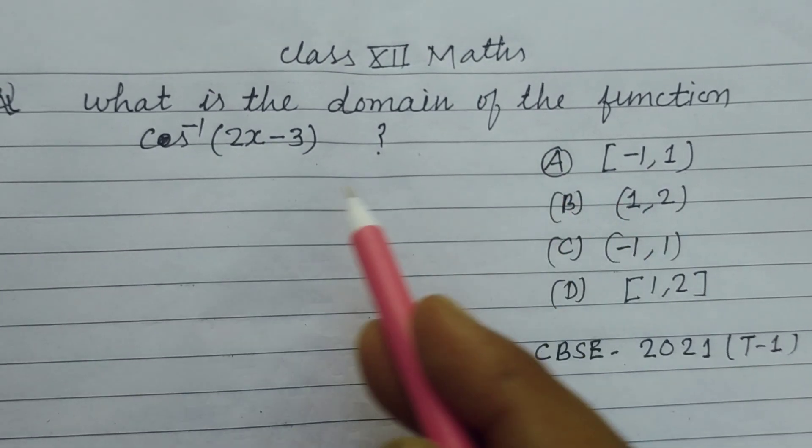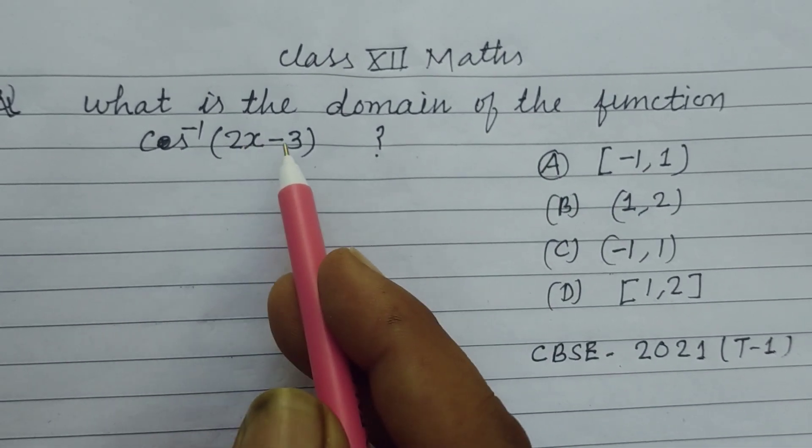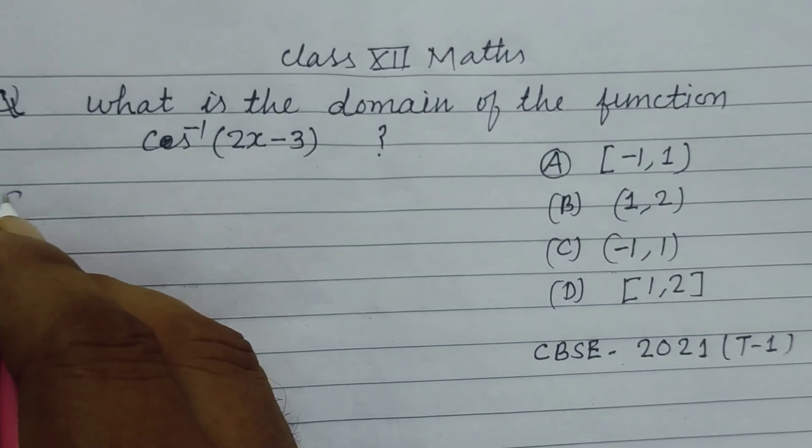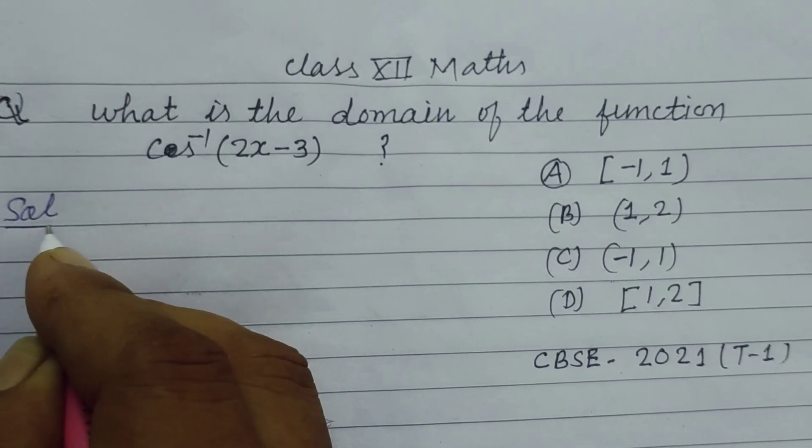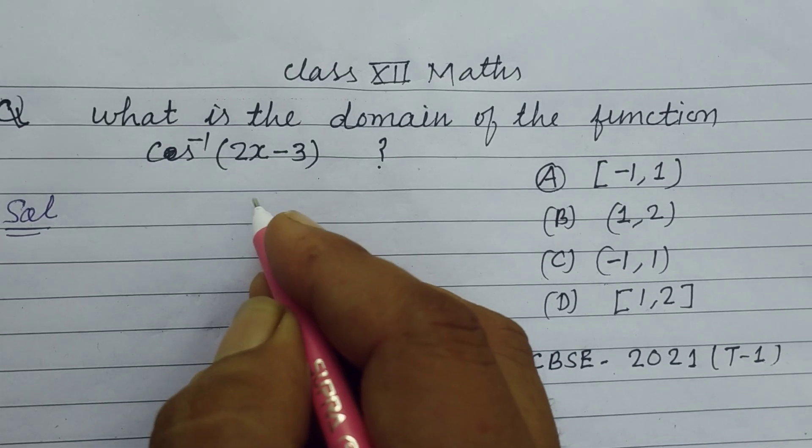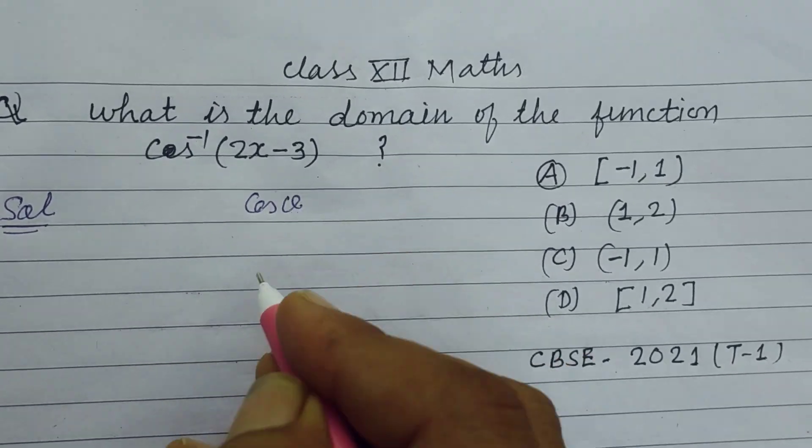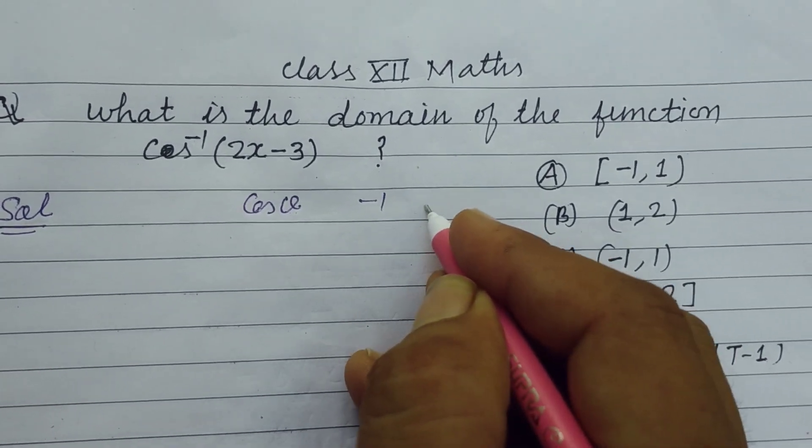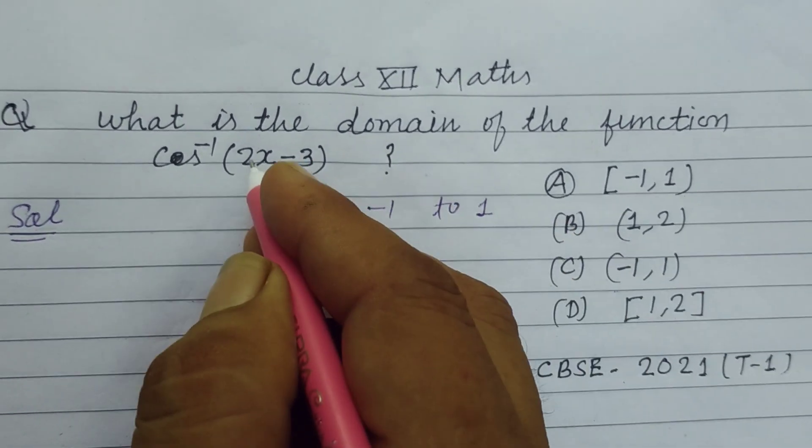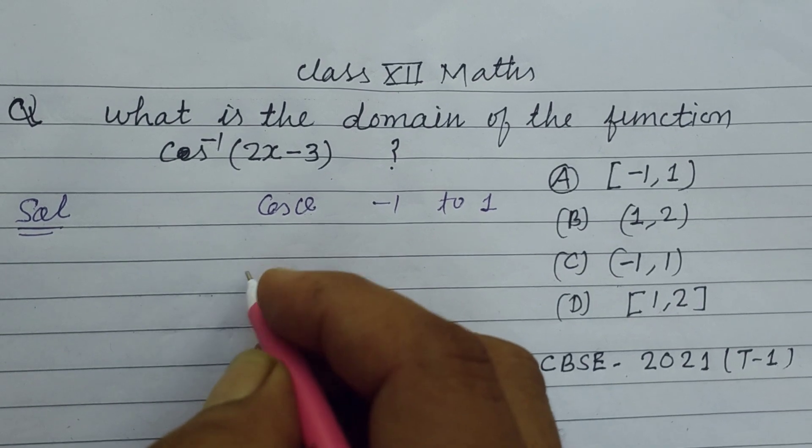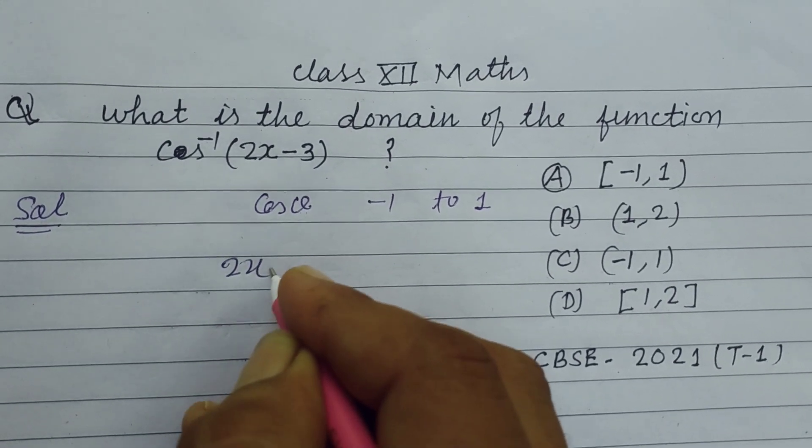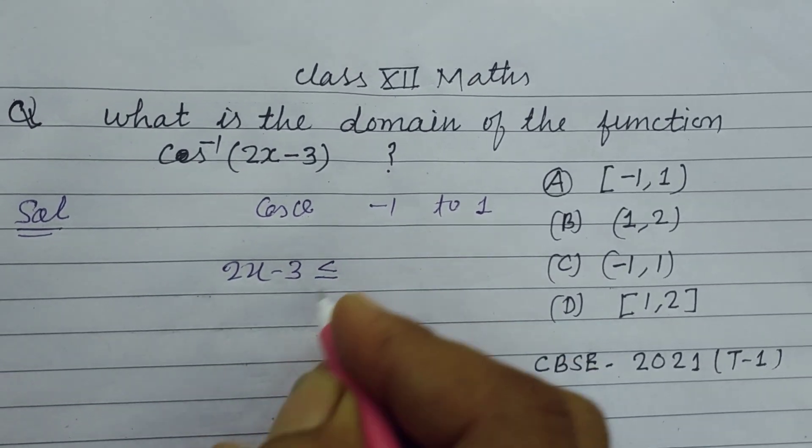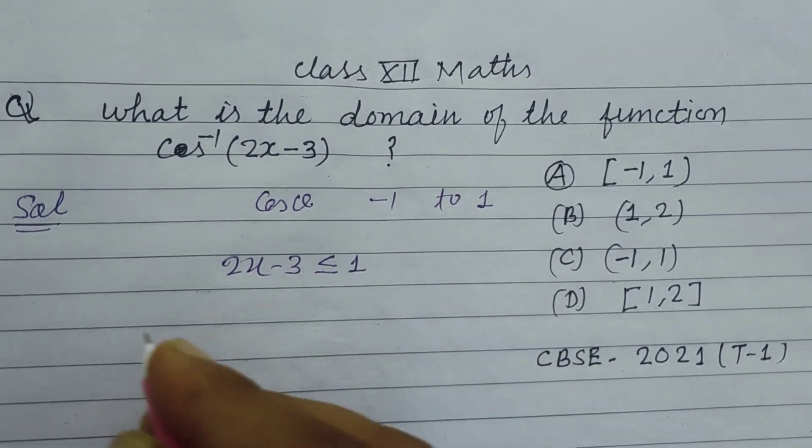What is the domain of the function cos inverse (2x minus 3)? You know that cos theta has value between minus 1 to 1, so we take this theta 2x minus 3 less than equal to 1.